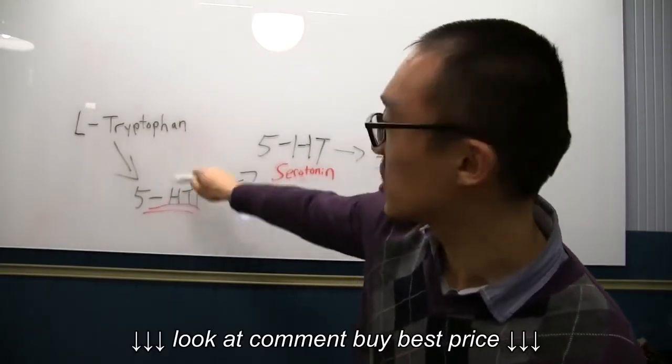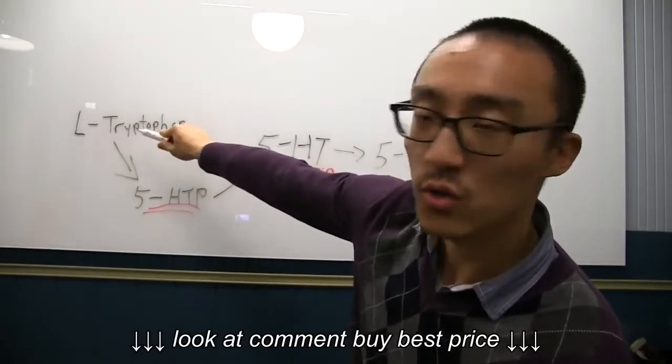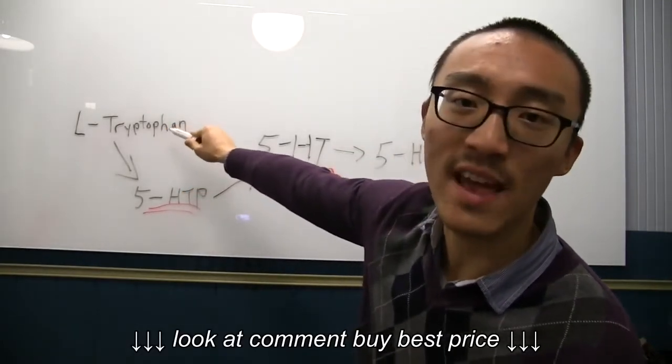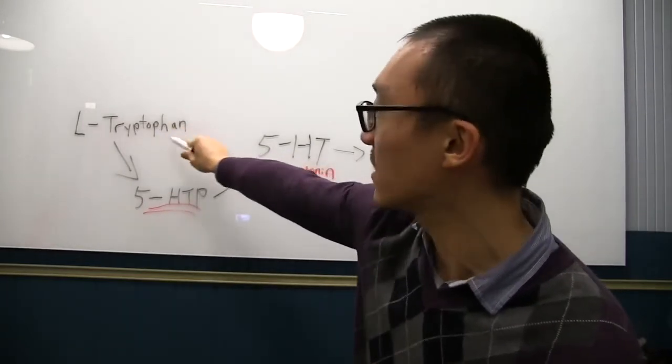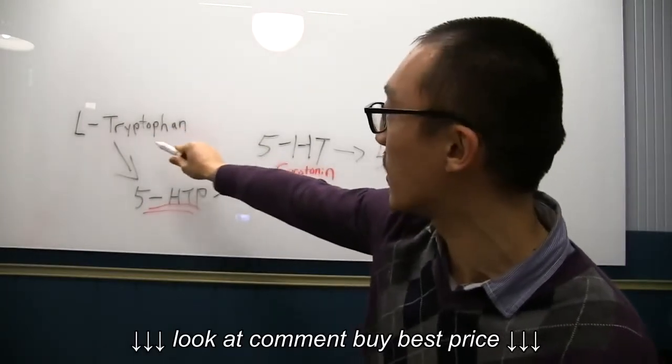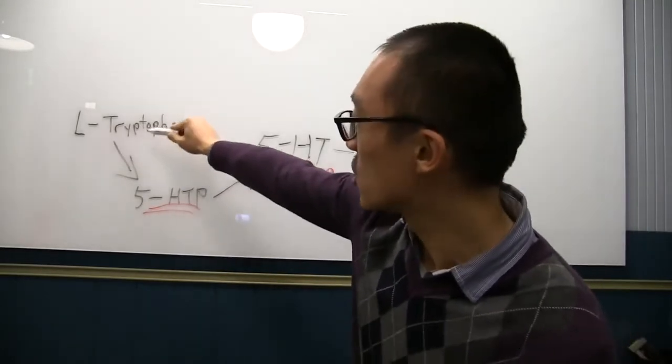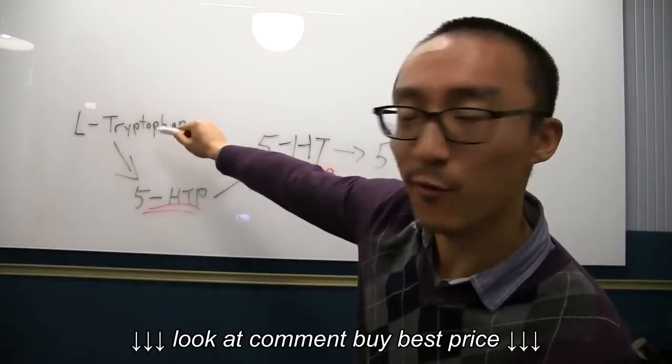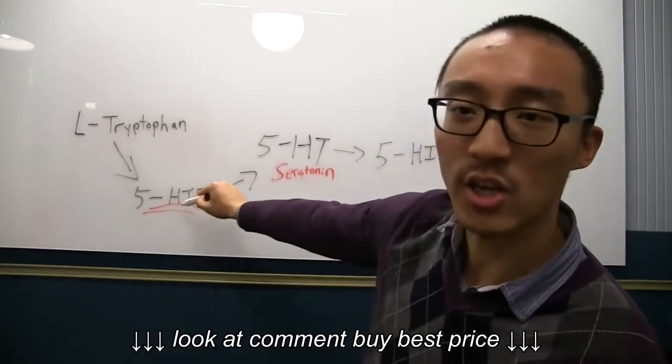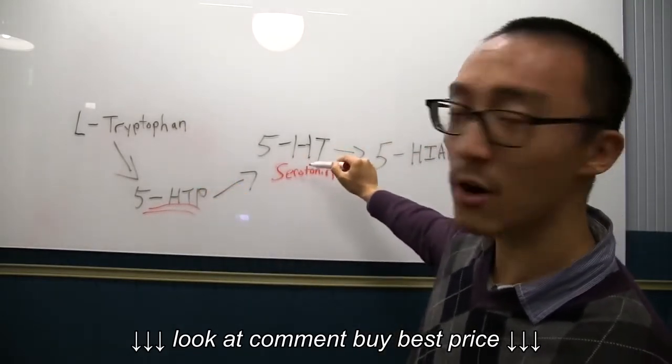To make 5-HTP, you use tryptophan, which is a protein that your body can't make itself. So, you get this from like fish and eggs and stuff like that and meat and stuff like that. So, soy, I believe. So, you take a protein from food, you make 5-HTP, which then becomes serotonin. And then if this doesn't get reused again, it gets broken down into this.